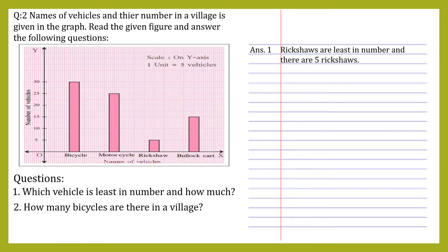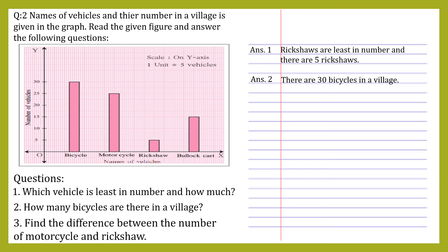Second question: how many bicycles are there in a village? Looking at the first rectangle, it has the highest height. With the help of an arrow, we can check — this arrow is pointing towards 30. So the answer is: there are 30 bicycles in a village.